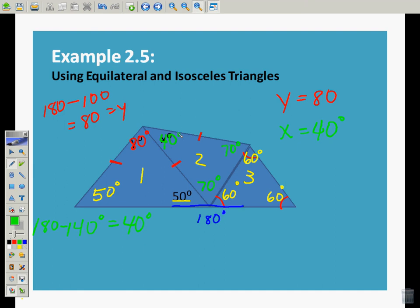So it all makes sense. Base angles are congruent. All three angles are congruent. Base angles are congruent. Vertex angle adds up to 180 with the rest of it.